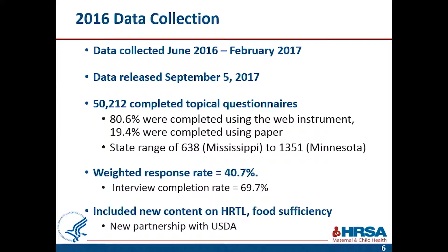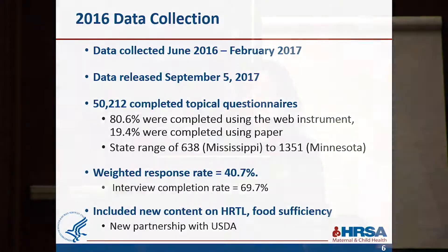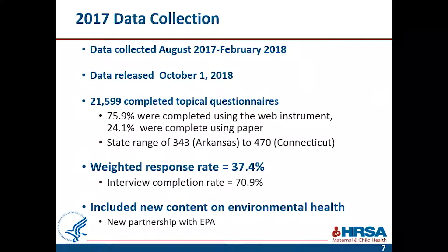In 2016, we had just over 50,000 completed questionnaires. Over three-quarters were collected via the internet. We had a weighted response rate of 40.7 percent. This was the first time the survey included content on school readiness, or healthy and ready to learn, and also the first time we included content on food sufficiency — a special partnership with USDA that continues. In 2017, the first year of what is now our traditional annual data collection, we had just under 22,000 completed questionnaires — again about three-quarters via the internet — with a weighted response rate of 37.4 percent. This was the first time the survey included content on environmental health, specifically two questions on pesticide exposure and mold exposure, both funded by the EPA.